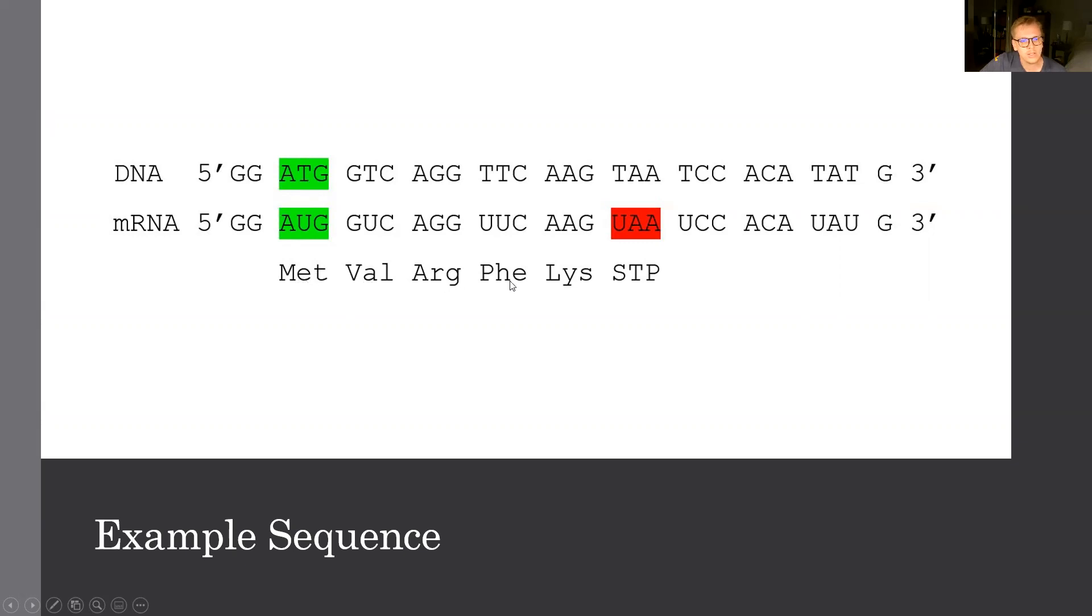and followed by valine, arginine, phenylalanine, lysine, and then we have our stop codon here, UAA. So this is going to be our initial five amino acid products. And this is going to change with each point mutation. So let's follow that in turn.